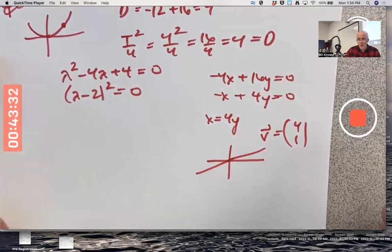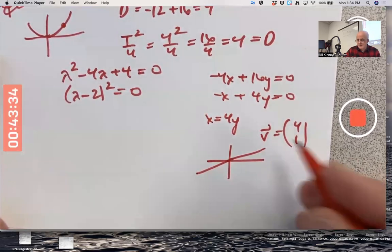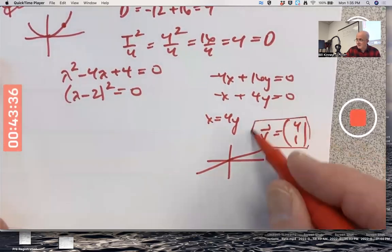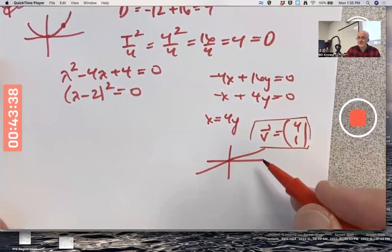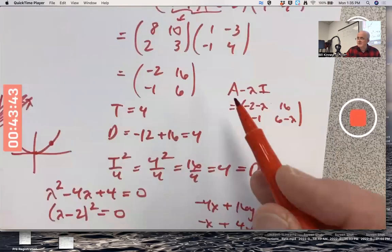So there's not a, there's only one linearly independent eigenvector, any non-zero multiple of that one. So there's not a basis of eigenvectors for the plane. So this matrix is not diagonalizable.